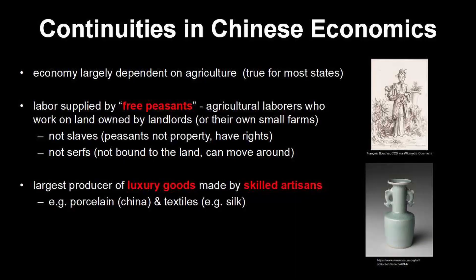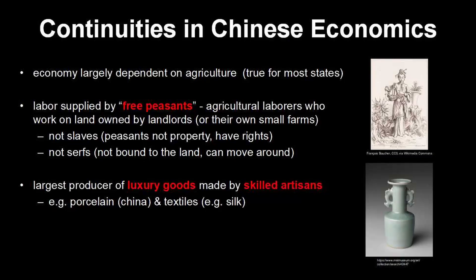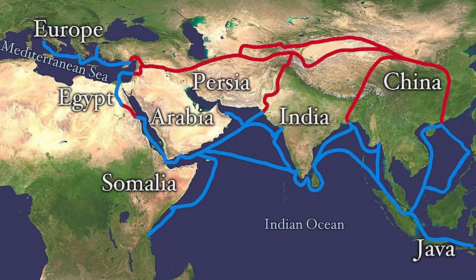Another important aspect of the economy, and another continuity, is that China was the world's leading producer of luxury goods — things like porcelain, also called China. Perhaps the most famous luxury good was silk. In fact, silk was so famous that they named the most famous trade route after it: the Silk Roads — not just one road — which stretched from China across the Eurasian landmass to the Mediterranean Sea. As far back as the Han Dynasty, Chinese goods including silk and porcelain had been highly valued and traded along this route.